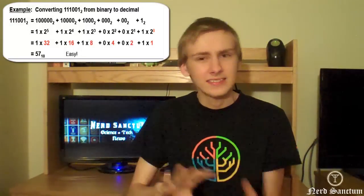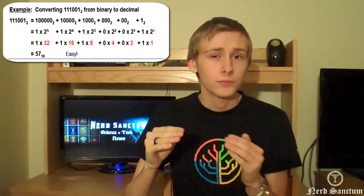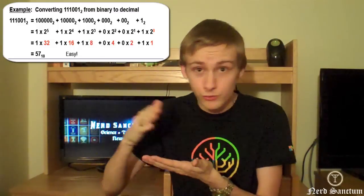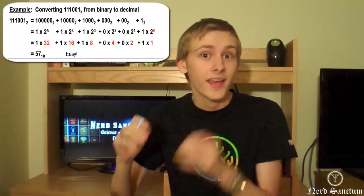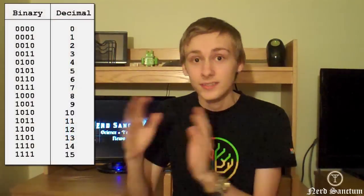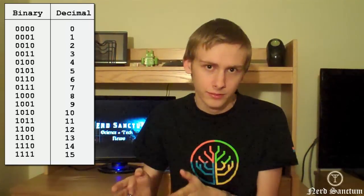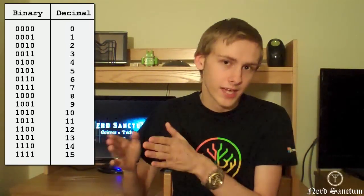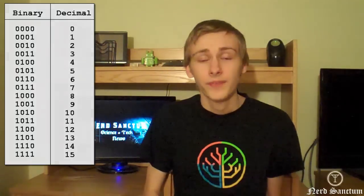Imagine binary is like decimal but it's base 2, so instead of going 0 through 9, we just go 0, 1, and then we round over to the next place. So 0 is 0, 1 is 1, and if we want to represent 2 in binary, that would be represented as 1, 0. Every time we need to round over, we simply add that extra digit on there.